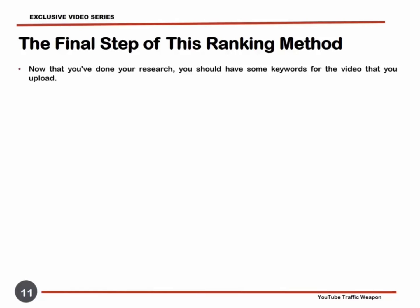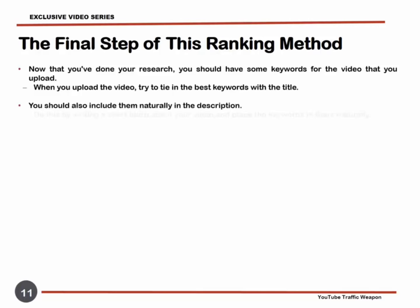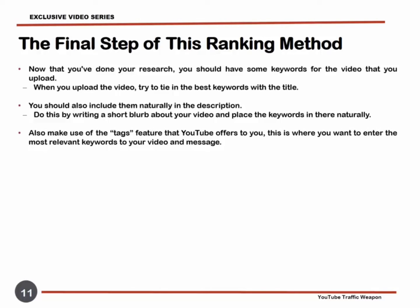Now that you've done your research, you should have some keywords for the video you plan to upload. When you upload the video, try to tie in the best keywords with the title. Also include them naturally in the description by writing a short blurb about your video and placing the keywords in there naturally. Make use of the tags feature that YouTube offers as well. It's super important that you don't start keyword stuffing — that's when you mindlessly place tons of keywords all over your video's description, title, and tags — as it hurts your rankings and looks bad.